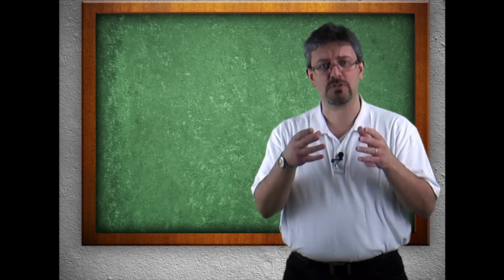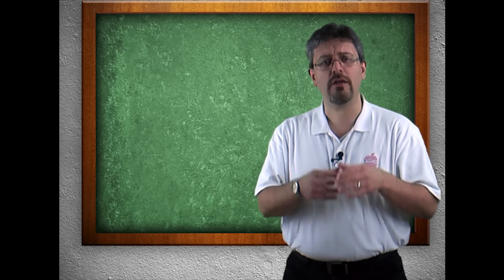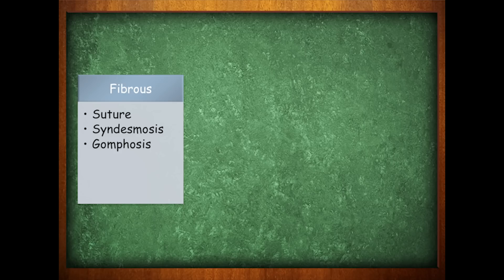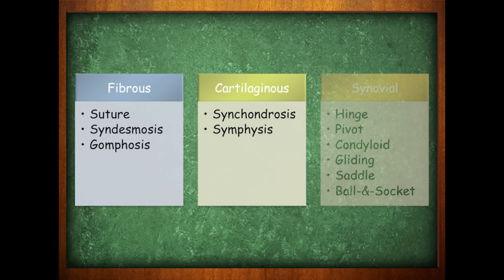Let's take a look at some of the types of joints under these classifications. Under fibrous, we have the sutures, the syndesmoses, and the gomphosis. Under cartilaginous, we have the synchondrosis and the symphysis. And under synovial — which is a whole separate lesson — we have the hinge, the pivot, the condyloid, the gliding, the saddle, and the ball and socket.